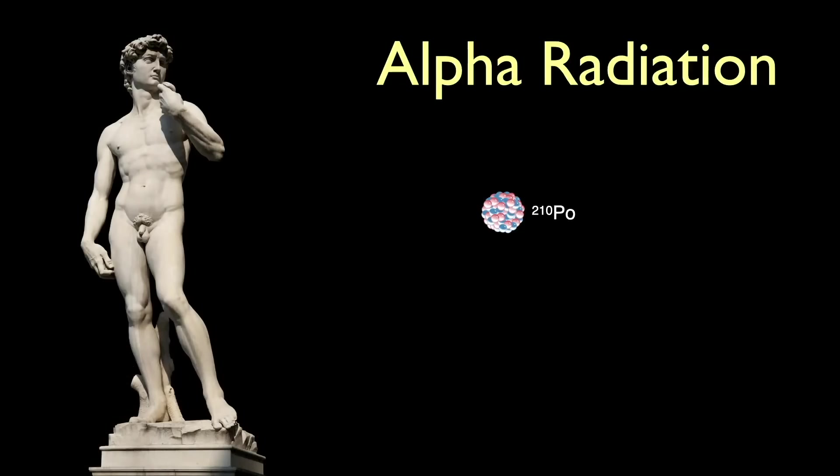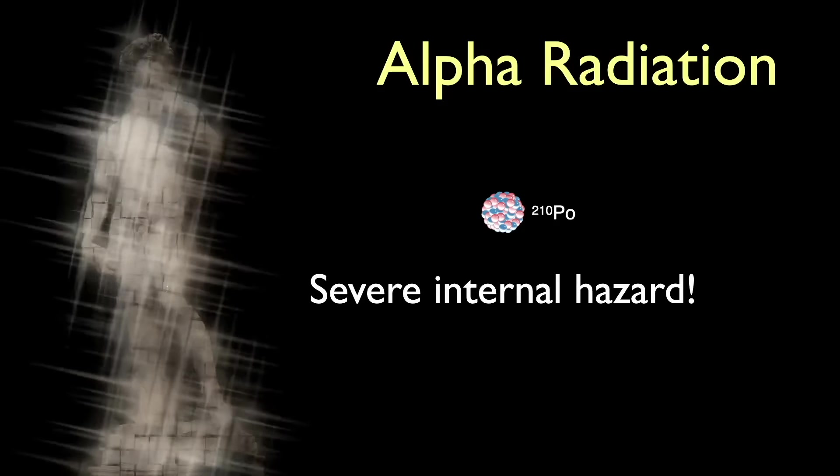However, if an alpha source such as polonium-210 somehow gets inside you, the alpha particle radiation is a severe hazard as it encounters live cells. Here, the alpha particles can ionize and damage delicate biological mechanisms in the cell, disrupting function or mutating DNA in the nucleus. A high enough exposure can even result in death.